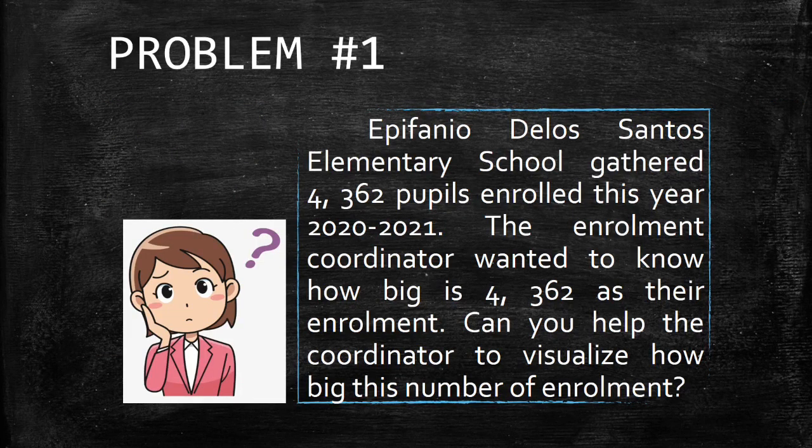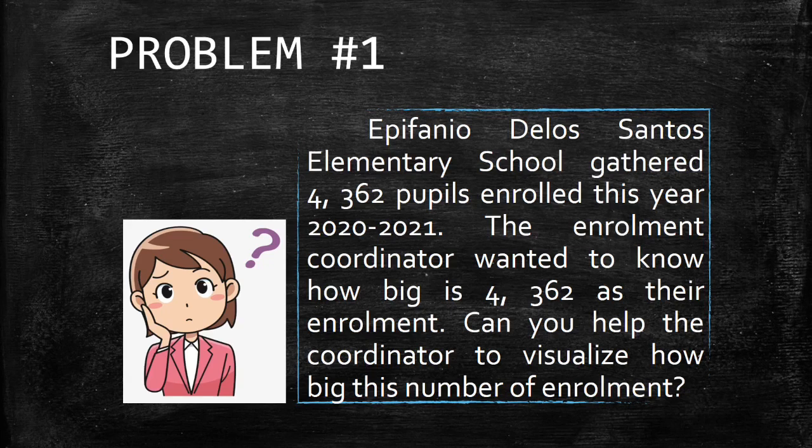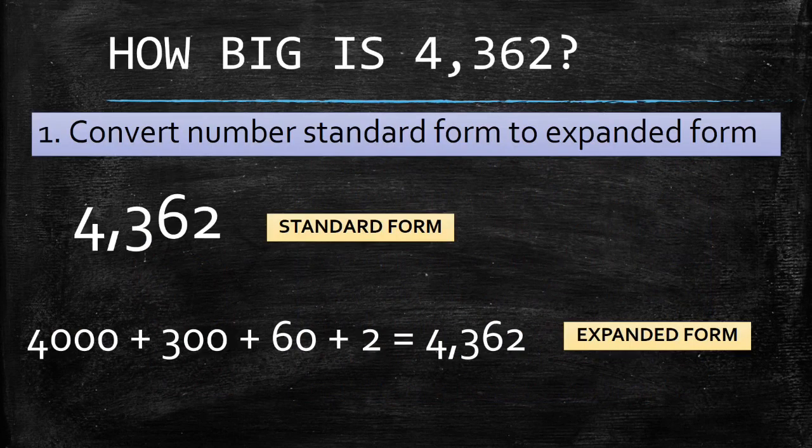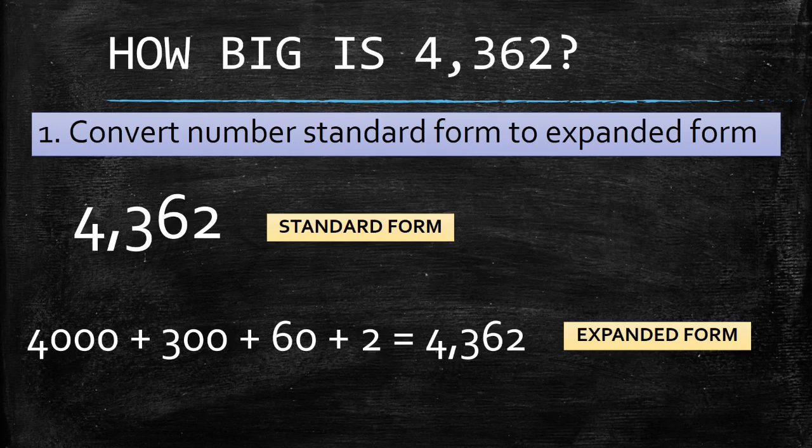Problem number 1. Epifanio Delos Santos Elementary School gathered 4,362 pupils enrolled this year 2020-2021. The enrollment coordinator wanted to know how big is 4,362 as their enrollment. Can you help the coordinator to visualize how big this number of enrollment? The question is, how big is 4,362?